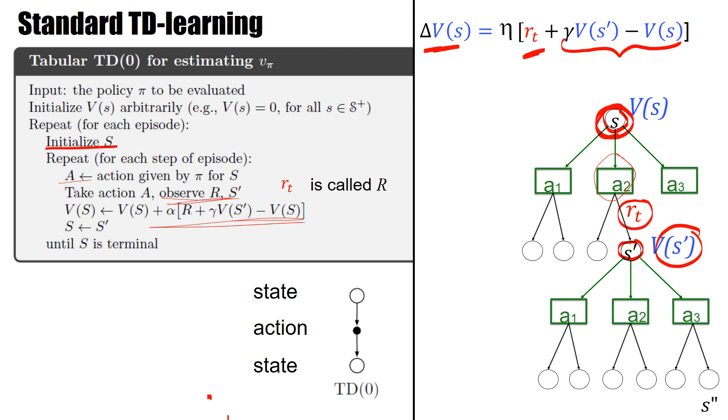Now, what's the difference now? The difference is most easily seen in this backup diagram. Now, we start in a state, we take an action, we arrive at the next state, and then we can update. It's called TD algorithm, TD zero. The argument zero becomes clear in one of the next videos.